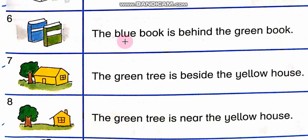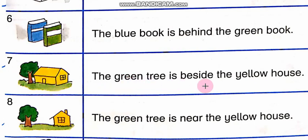In the sixth picture: The blue book is behind the green book. Behind mean pichhe — jou blue book hai woh green book ke peeche hai. Green book ke peeche koon si book hai? Blue book hai. In the seventh picture: The green tree is beside the yellow house.